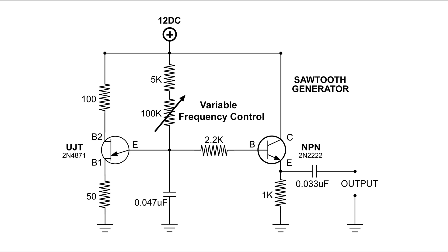The sawtooth wave is developed across the capacitor, and we have a 2200 ohm resistor connected at the top of the capacitor. The other side of that resistor goes to the base of an NPN transistor, and this NPN transistor amplifies the sawtooth wave.